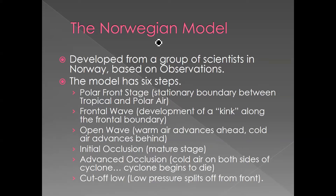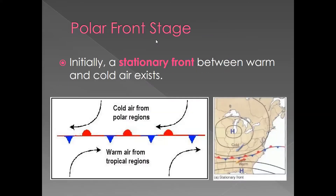Now let me detail each one of these steps. The first step is the polar front stage. This is very common in the United States — we have a stationary front that acts as a boundary between warm air to the south from the tropics and cold air to the north. Along this front, nothing's really happening. Everything's in harmony. There's no real storms, nothing interesting going on — it's simply a boundary between warm air and cold air.